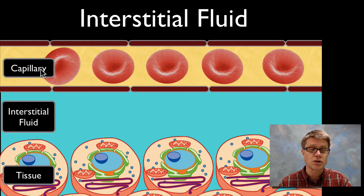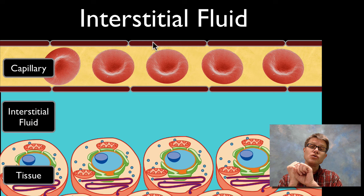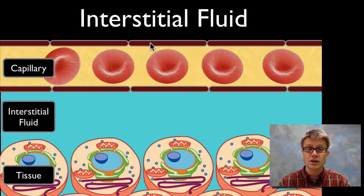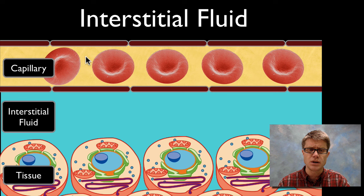Here's a diagram to show that. This is a capillary — the tube of the capillary is made up of endothelial cells, which are very thin cells. On the inside of the capillary is plasma, and then we have red blood cells, platelets, and white blood cells as well. When talking about interstitial fluid specifically, the plasma on the inside of our blood is very similar in composition to the interstitial fluid.